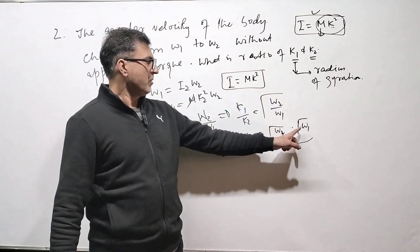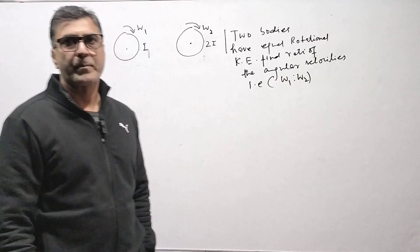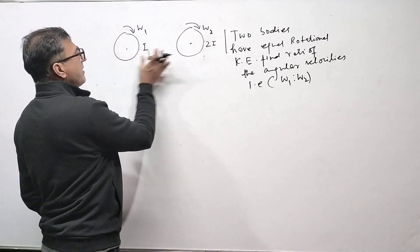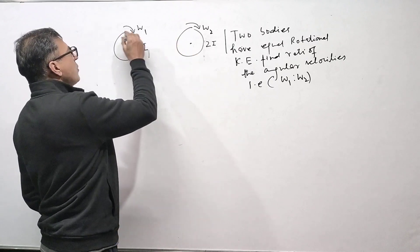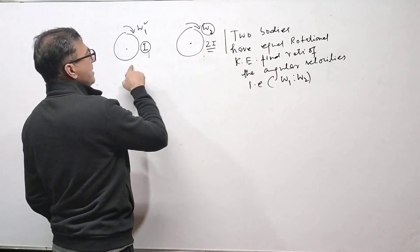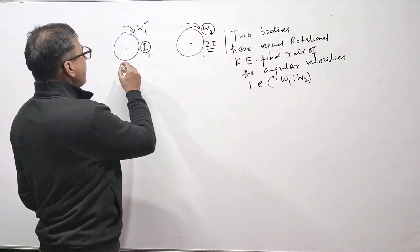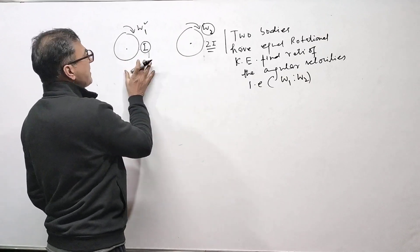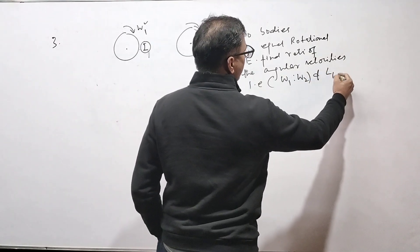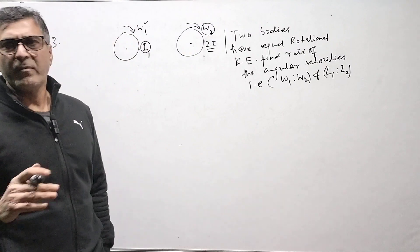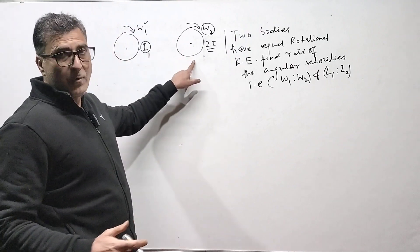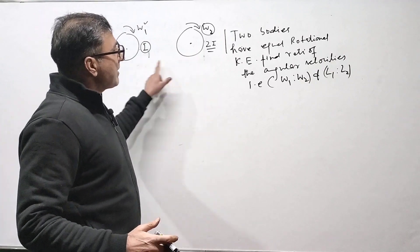Now the third problem: there are two bodies — maybe discs or spheres. The first rotates with angular velocity ω₁ and moment of inertia I₁. The second rotates with angular velocity ω₂ and moment of inertia 2I₁. Their rotational kinetic energies are equal. We need to find the ratio of their angular velocities and also the ratio of their angular momenta L₁ : L₂.